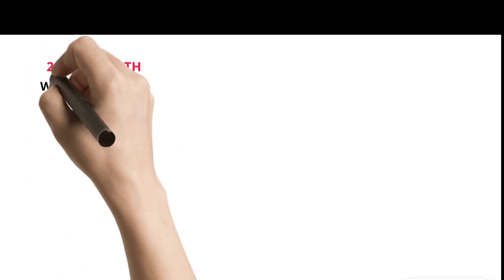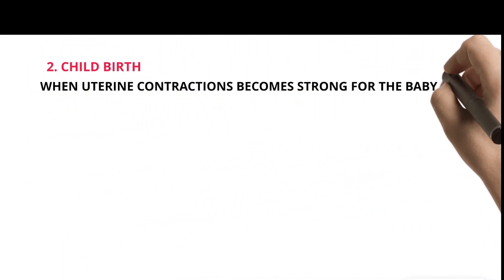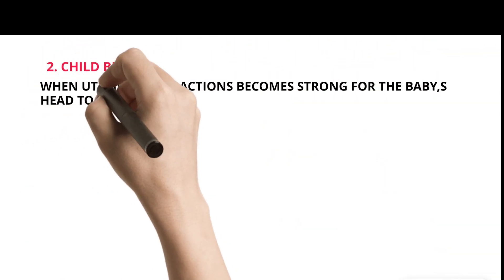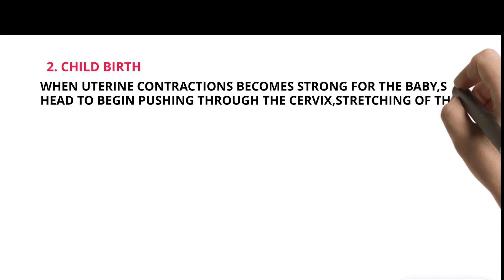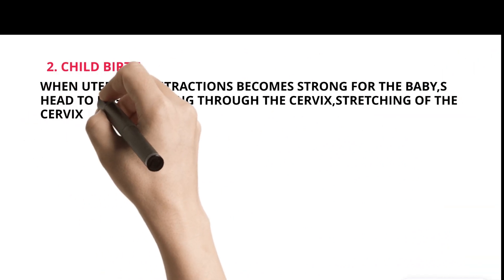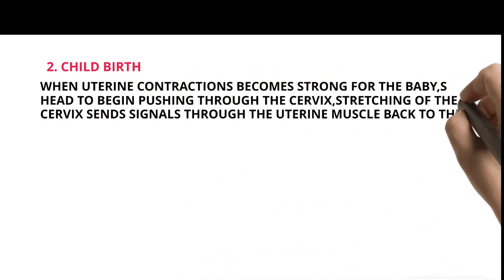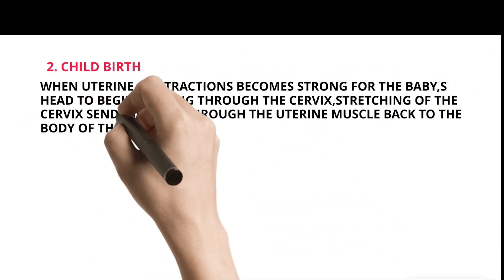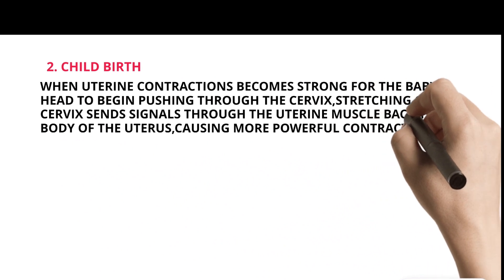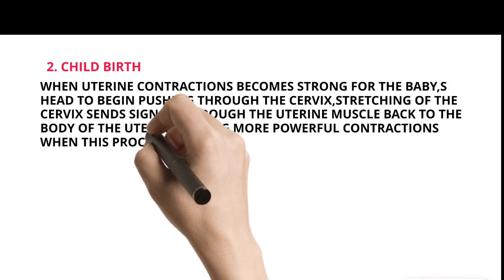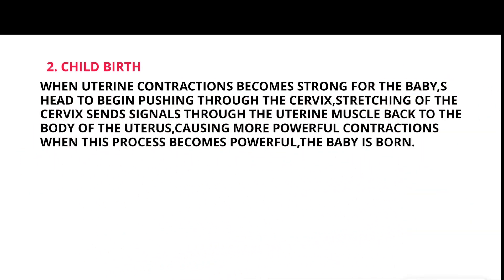Childbirth: When uterine contractions become strong enough for the baby, stretching of the cervix causes the head to begin pushing through the cervix, sending signals back to the body of the uterus, causing more powerful contractions. When this process becomes powerful enough, the baby is born.